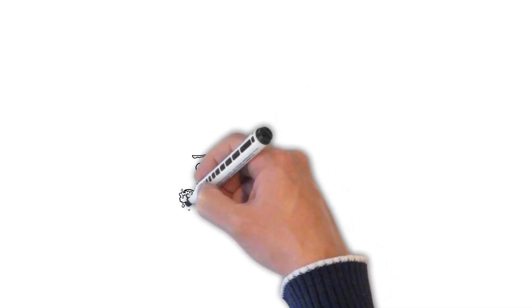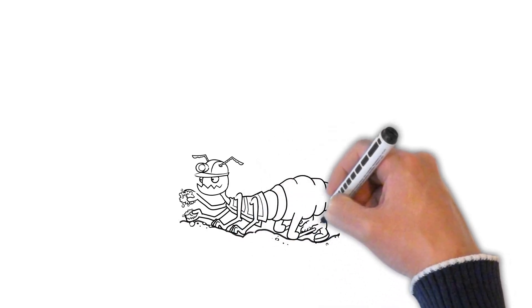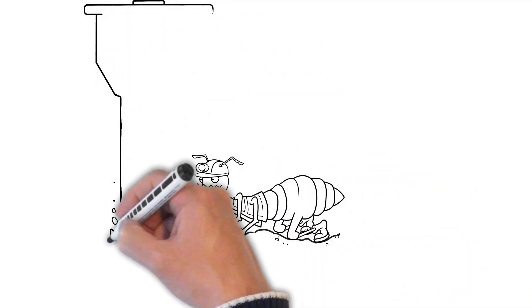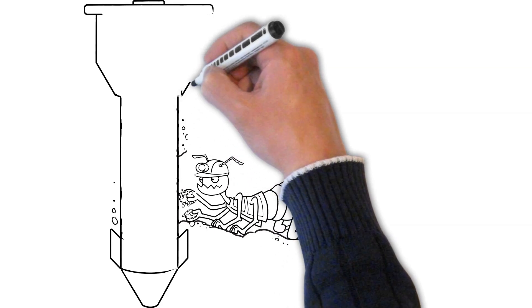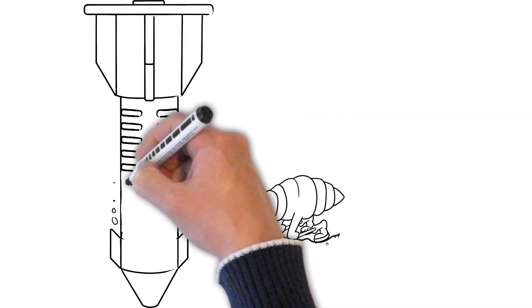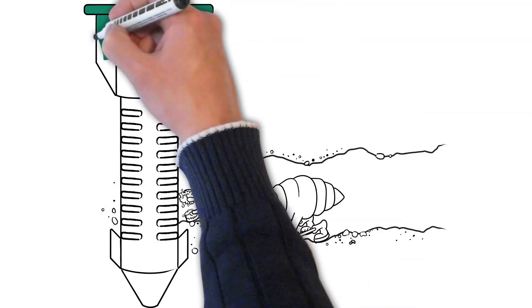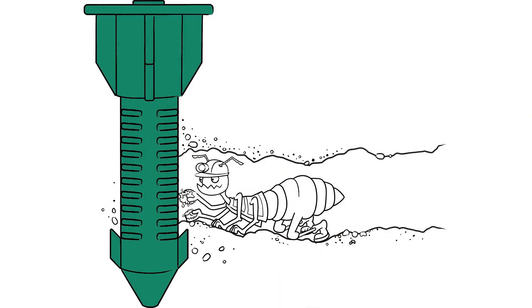So the scenario happens like this: Willie the worker happens upon a Sentricon bait station. He eats the bait because it's been proven termites prefer the bait over wood. Then he heads back to serve up a nice feast for his friends in the colony. Except this feast will be lethal and right to the heart of the colony.